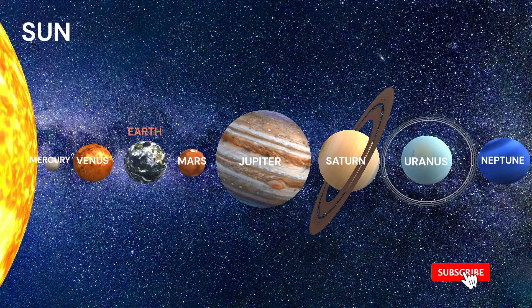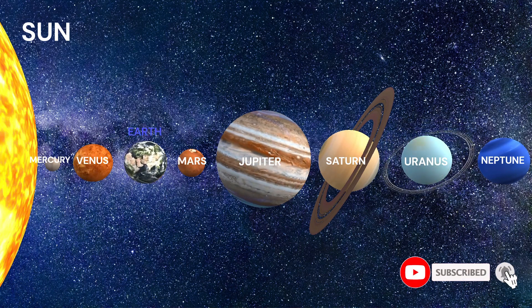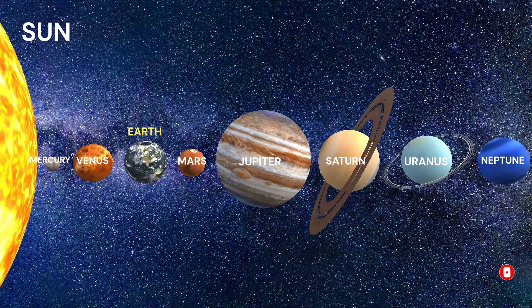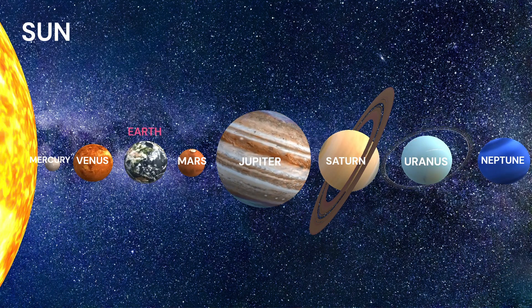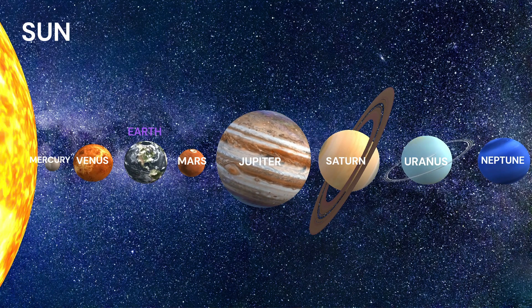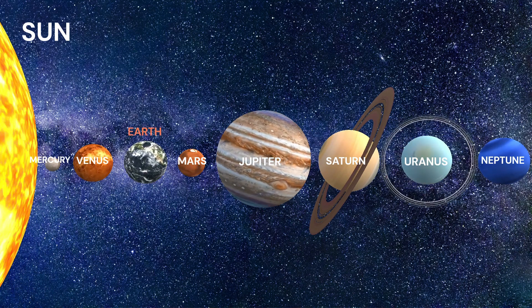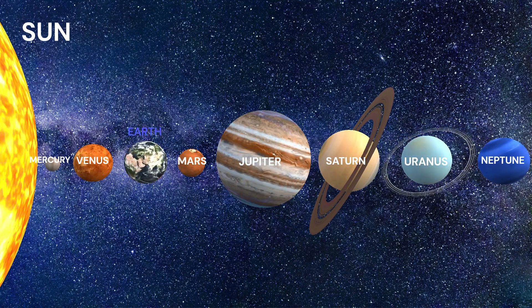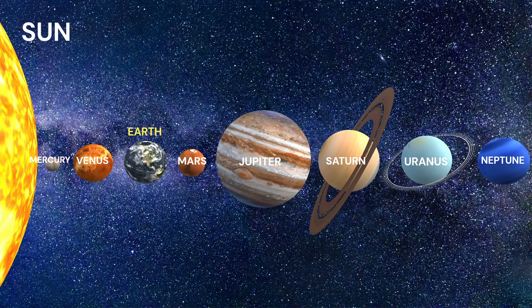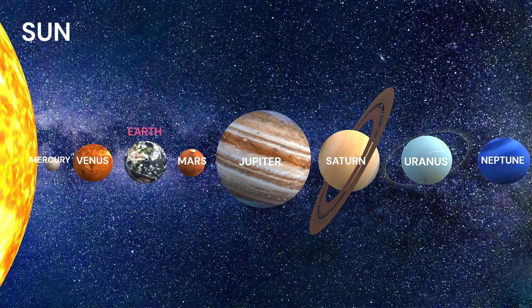The hottest planet in our solar system is Venus. It has a thick atmosphere that traps heat, making it hotter than even Mercury, which is closer to the sun. The coldest planet in our solar system is Neptune. Its average temperature is around minus 200 degrees Celsius.